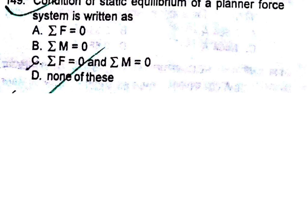The condition of static equilibrium of a planar force system: summation of forces = 0 and summation of moments = 0. All resultant forces and resultant moments should be zero. So C is the answer — both resultant forces and resultant moments must be zero for static equilibrium of a planar force system.